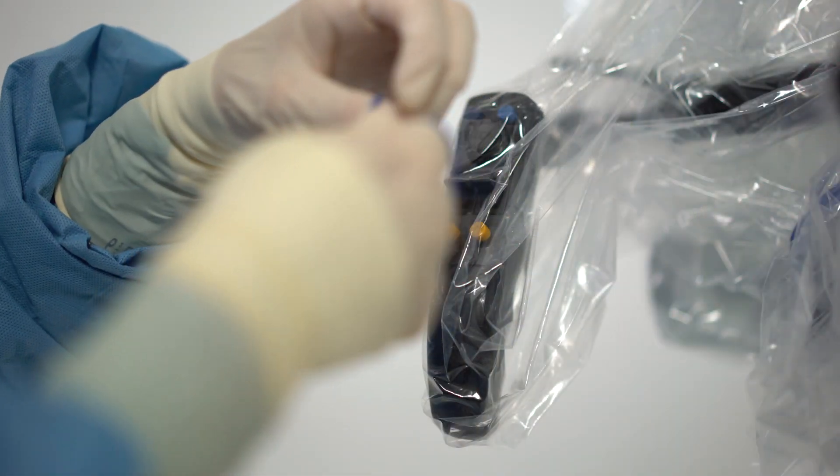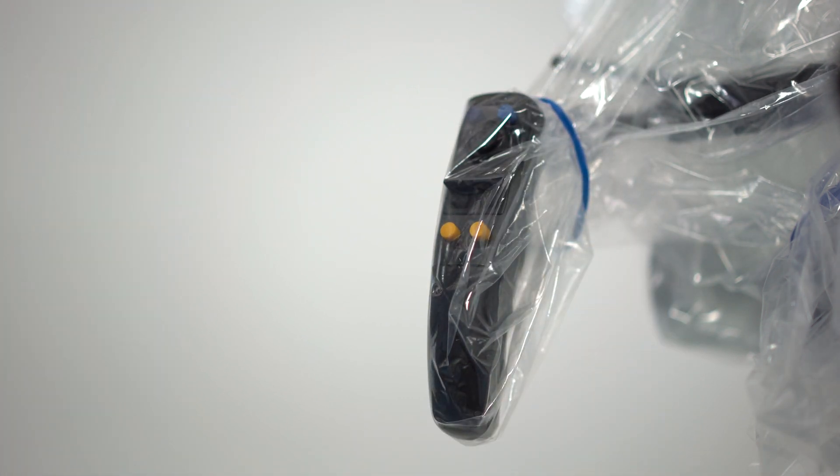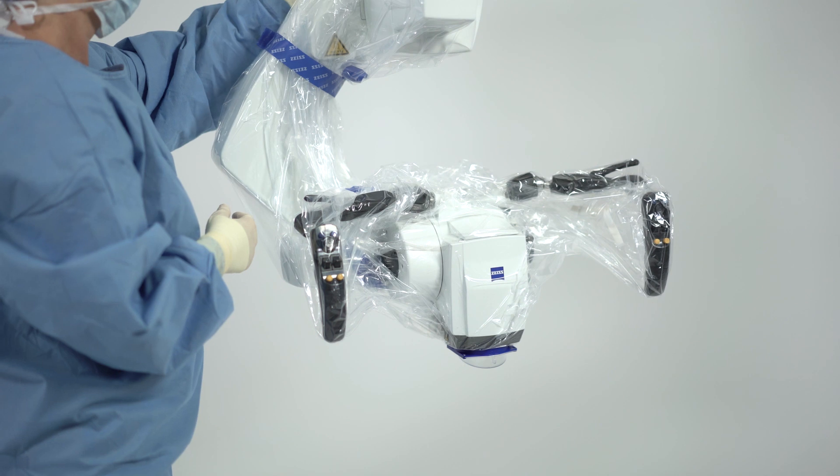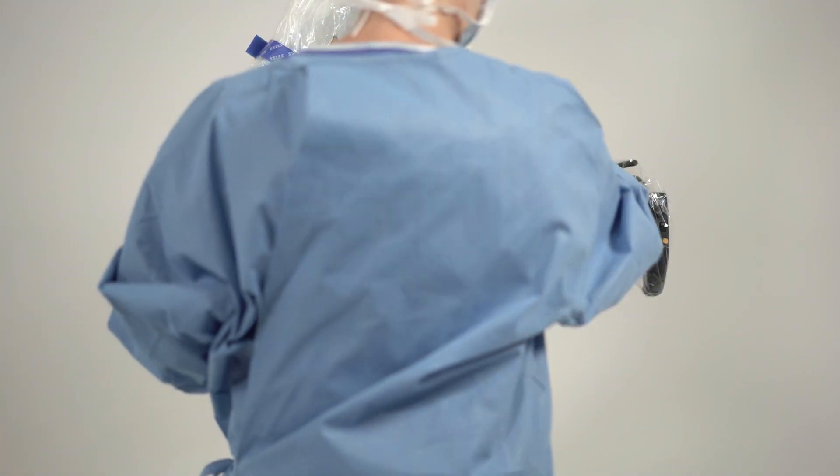Optionally, use the blue elastics to secure excess drape around the hand grips or other areas of the device. Make sure to not tighten the drape too much in order to avoid tension of the drape or blocking the rotations or switches of the device.